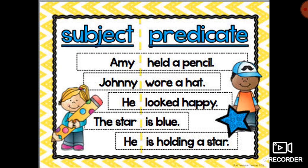Now let's do another practice exercise. Here we have five sentences. First: 'Amy held a pencil.' The subject is Amy, and 'held a pencil' is the predicate. Second sentence: 'Johnny wore a hat.' Here, 'Johnny' is the subject and 'wore a hat' is the predicate. Third: 'He looked happy.' 'He' is the subject and 'looked happy' is the predicate.